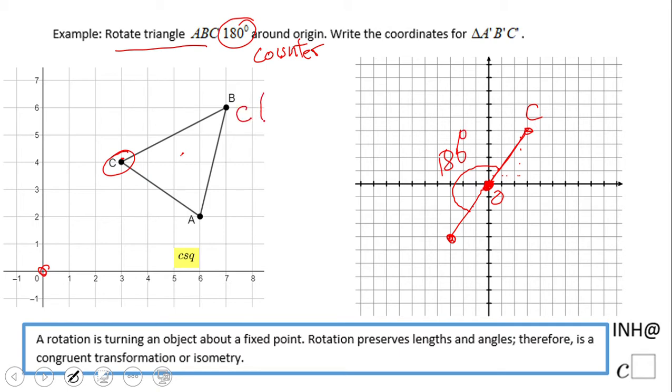So let's see: point C was (3, 4) and now becomes C prime (-3, -4). So (x, y) becomes what? Negative x, negative y. Let's try to get the rule now.